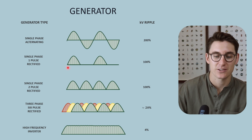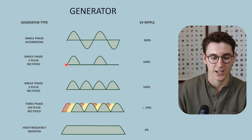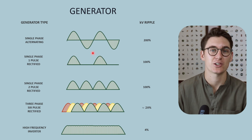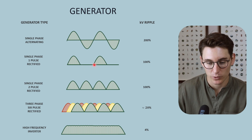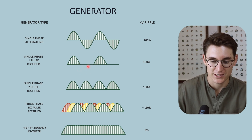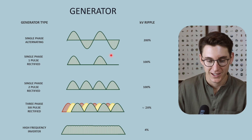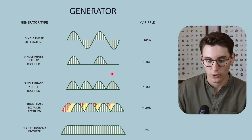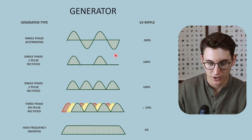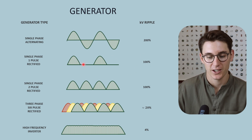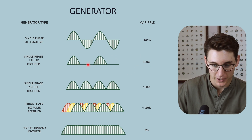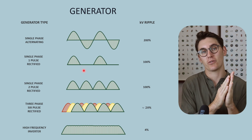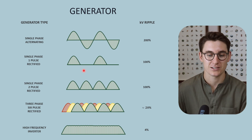If we look at half wave rectification, the positive deflections stay positive and we prevent the negative alternating current from passing through. The voltage peaks are the same as our single phase alternating current, but we no longer have that negative deflection — our KV ripple here is 100%. The issue is we have long periods of no voltage and no current flow, with no electrons going from our cathode to our anode for half of our cycle.